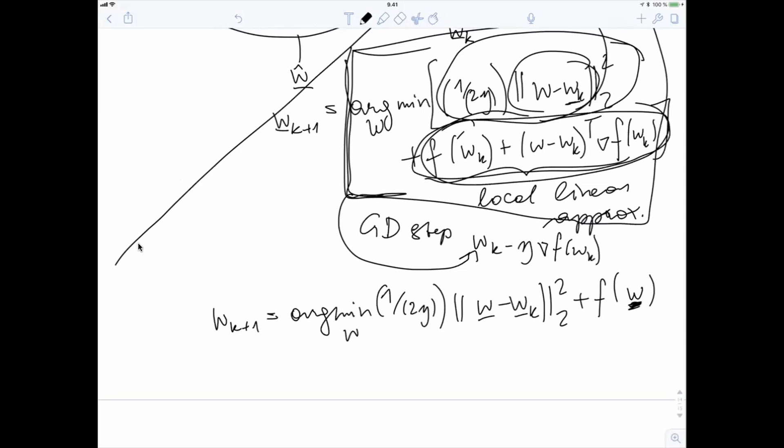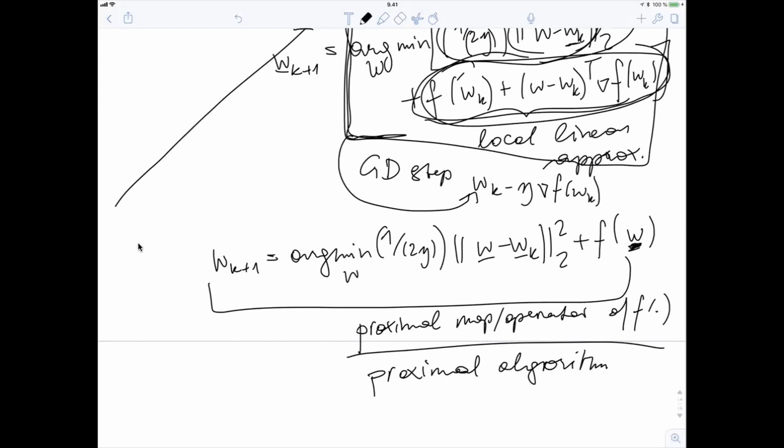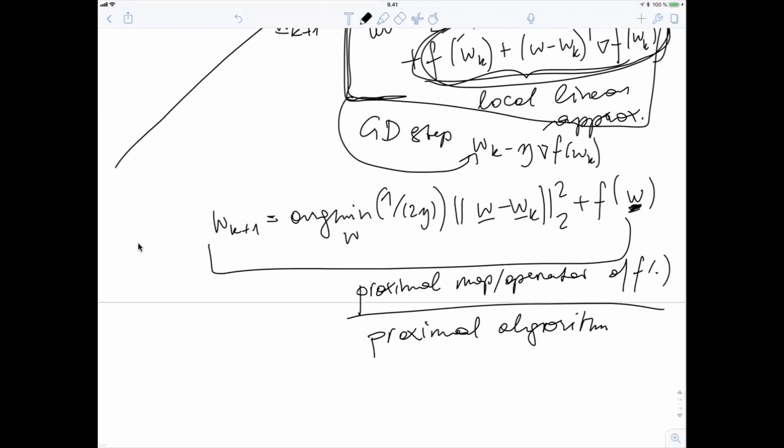Might be good. Instead of using approximations, use the original object. Why not? And it turns out that this is also useful. And this is actually called a proximal map, proximal map or proximal operator of the function f. And this repeating this proximal map is then called a proximal algorithm. And it turns out that also this proximal algorithm has nice convergence properties. So it converges to the minimum and it does so with reasonable speed.